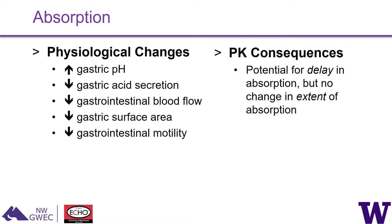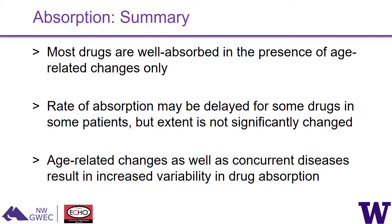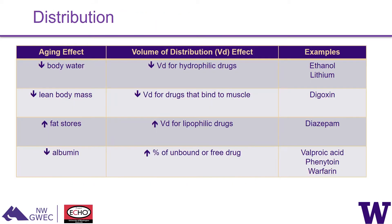The physiologic changes in the gastric system with aging have relatively minor consequences. There may be a delay in absorption but typically no change in the extent of absorption, because most drugs are absorbed through passive diffusion, which is not affected by aging. One key consideration: calcium carbonate experiences decreased absorption because it needs an acidic environment, and aging increases gastric pH. Switching to calcium citrate is a simple solution.